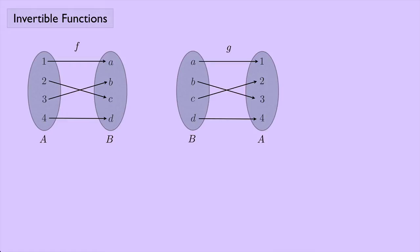In this case, I have found a function that does just that, and we can refer to G as the inverse of F, or we can write it like this: G equals F with a little negative 1 exponent — that little negative 1 denotes inverse. Now, not all functions have inverses, but when they do, we can make the following definition.